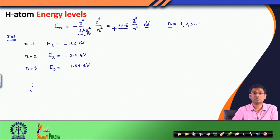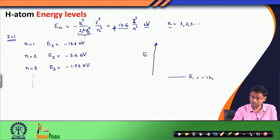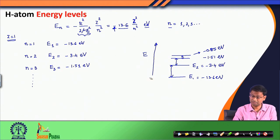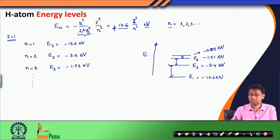If I have to plot this energy level diagram, with energy on the vertical axis: E₁ is minus 13.6 electron volt, E₂ is minus 3.4 electron volt, E₃ is minus 1.51 electron volt, and the next one is something around minus 0.85 electron volt, and so on. One thing you must have realized is that the energy spacing between two consecutive levels keeps on decreasing as we go higher in energy. As we increase n, the energy is increasing but the spacing between two consecutive energy levels is decreasing.